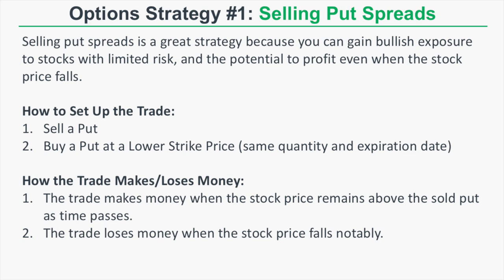Here is how you set up this trade: first you're going to sell a put, then you're going to buy another put at a lower strike price with the same quantity and in the same expiration cycle as the short put. This trade makes money when the stock price remains above the put that you sold as time passes.